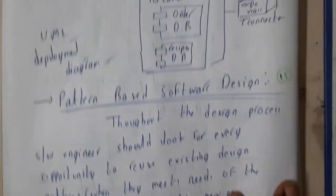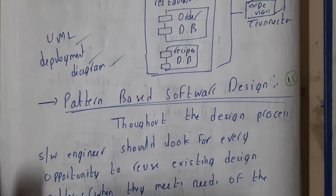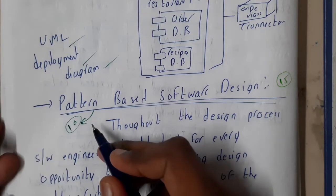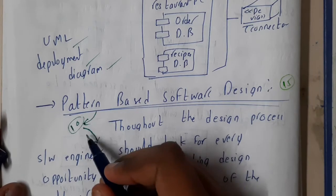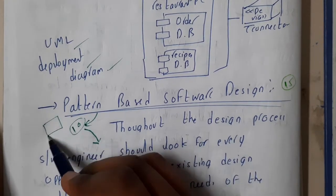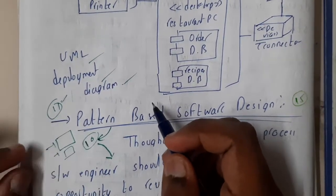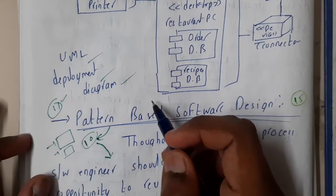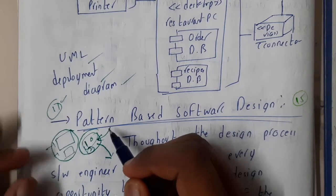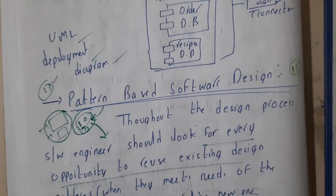Assume you are working in a big company that did around 10 projects previously, and the company only accepts web-based projects. Most websites — around 80 to 90 percent — will have a login page and a registration page. So if you get an 11th project that also has these, is it necessary to design the login page, the buttons, and everything again? No. You already have 10 projects with the same modules, so you can reuse them. This is the pattern you observe, and you reuse the code for efficiency.